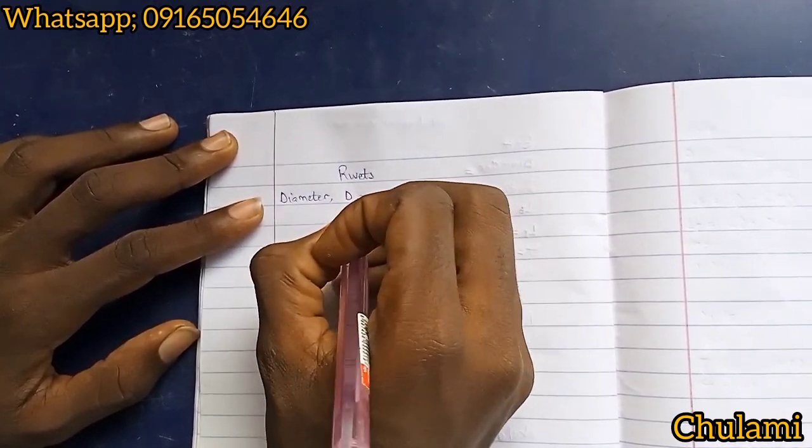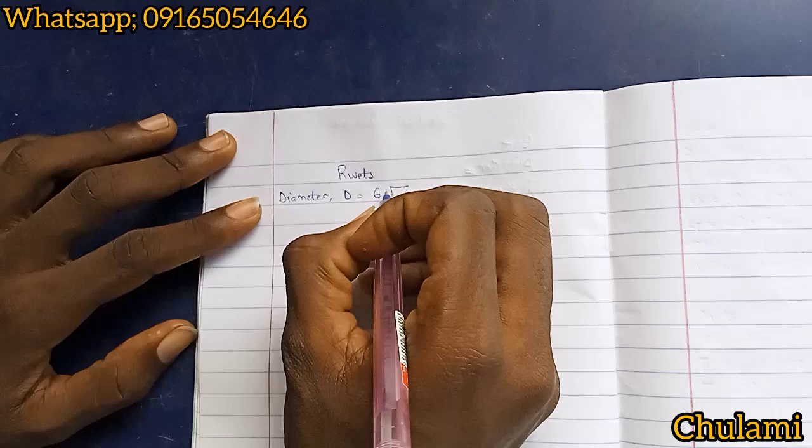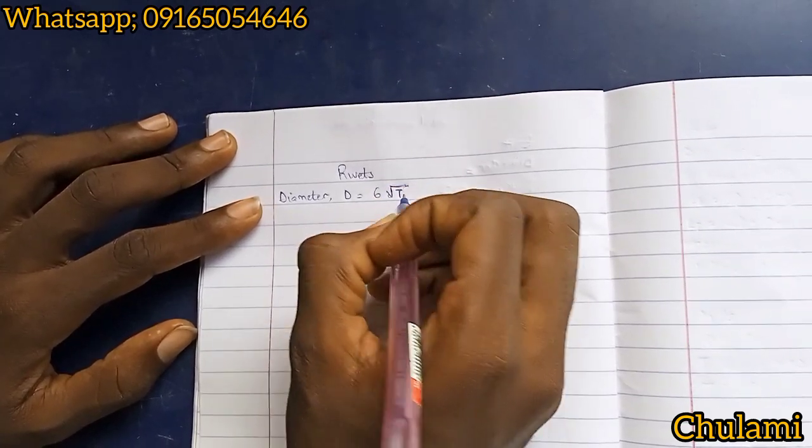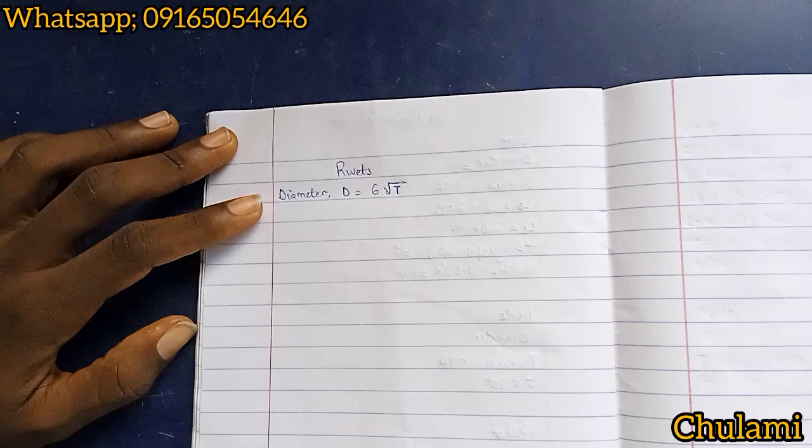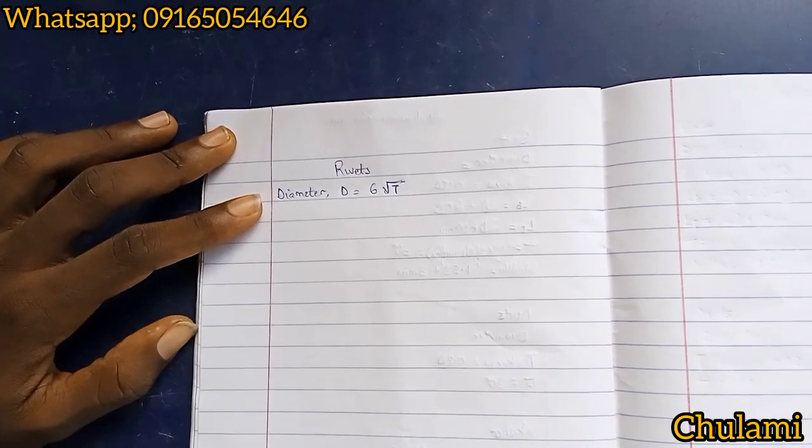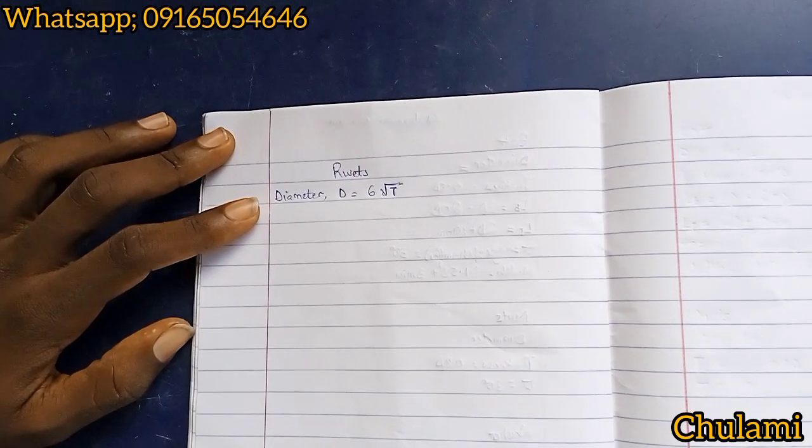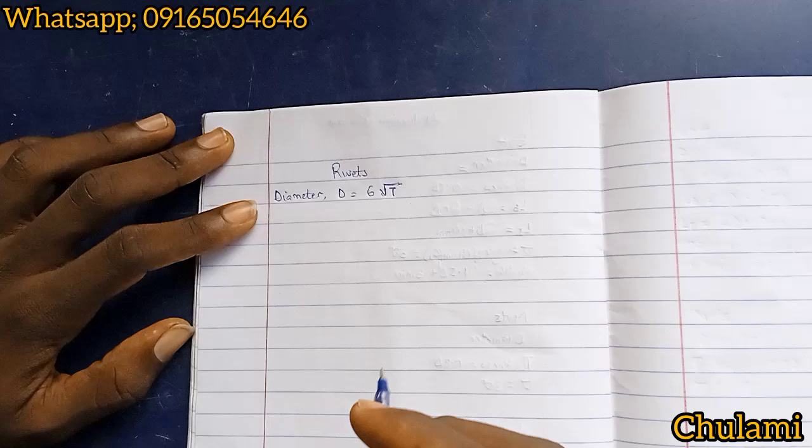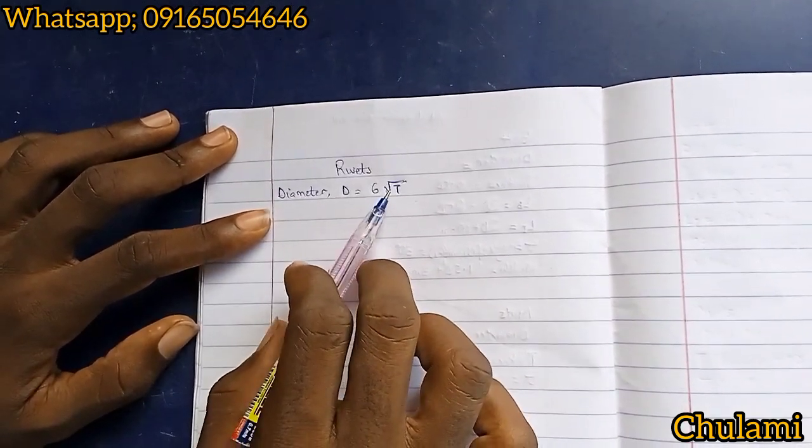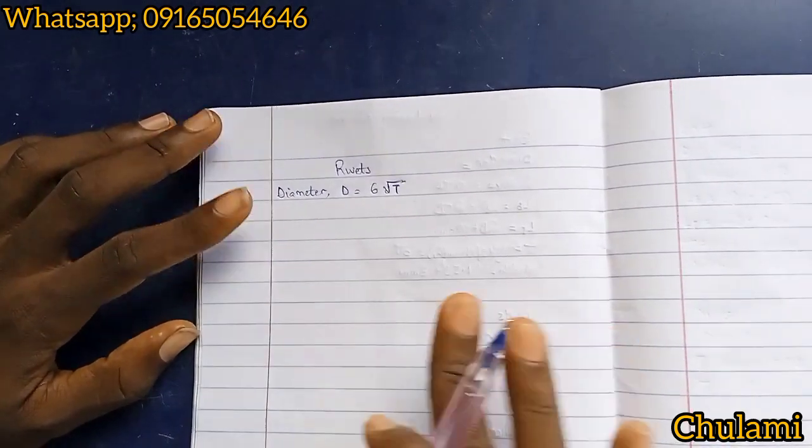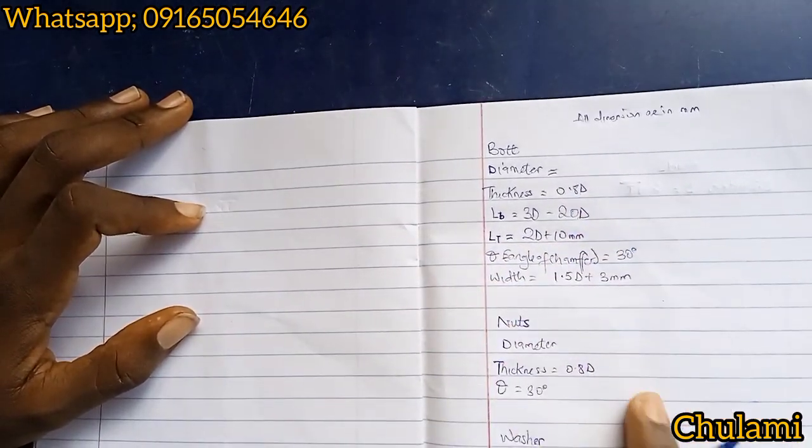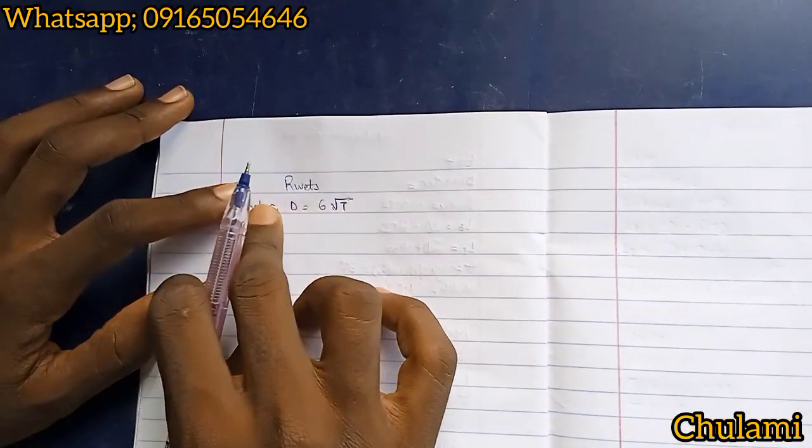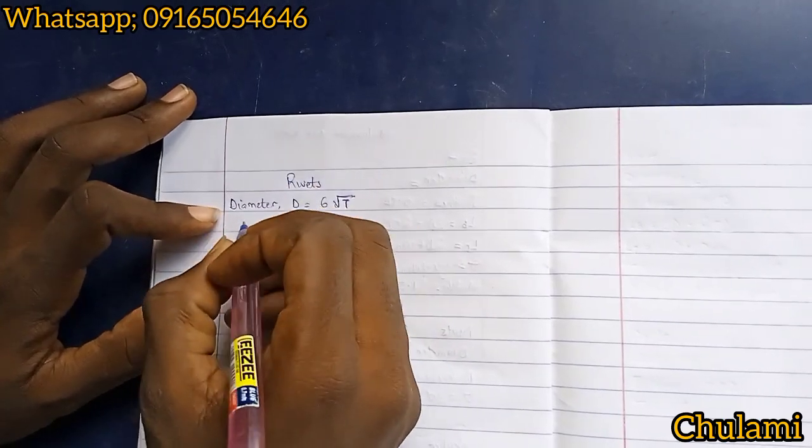Okay, so how much diameter? But now in this case there is a formula for calculating diameter. Diameter d is equal to 6 root t, where t here is the thickness of the main plate. There is no formula for actually finding thickness unless it's given in the question, just as in bolts and nuts.